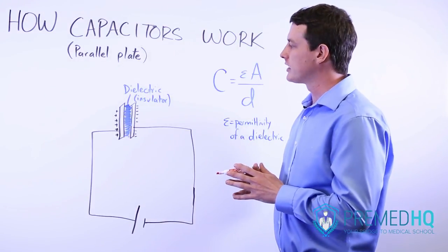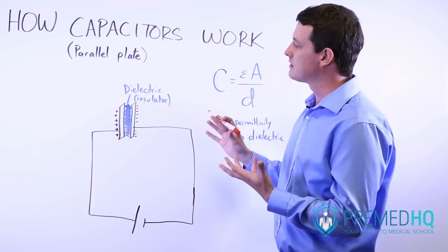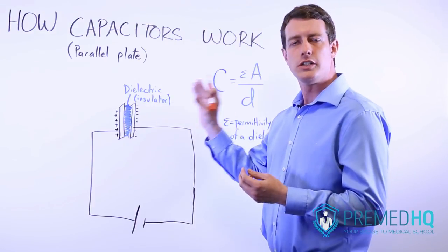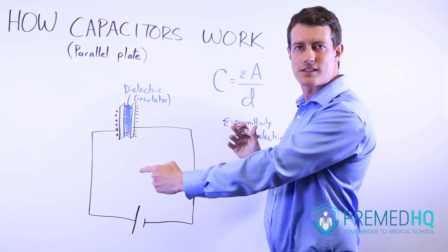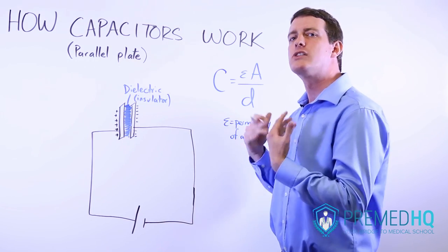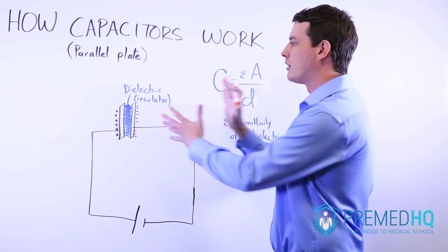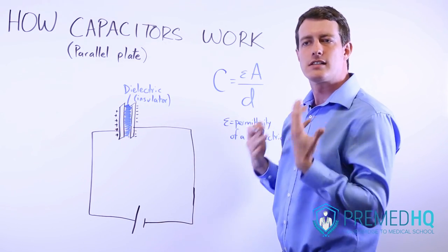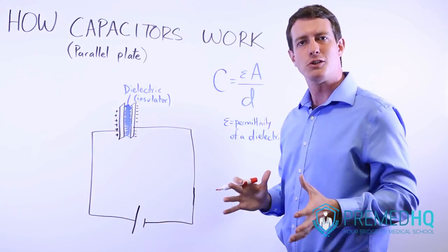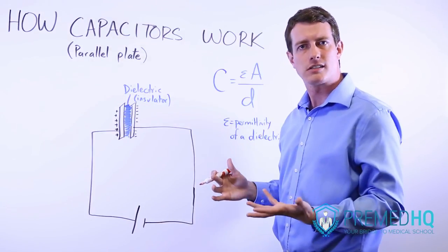This dielectric serves as an insulator so that not all units of charge, not all electrons, can readily pass from one side to the other. In so doing, that creates a gradient of positive on one side and negative on the other that is essentially potential electrical energy that can later be harnessed.